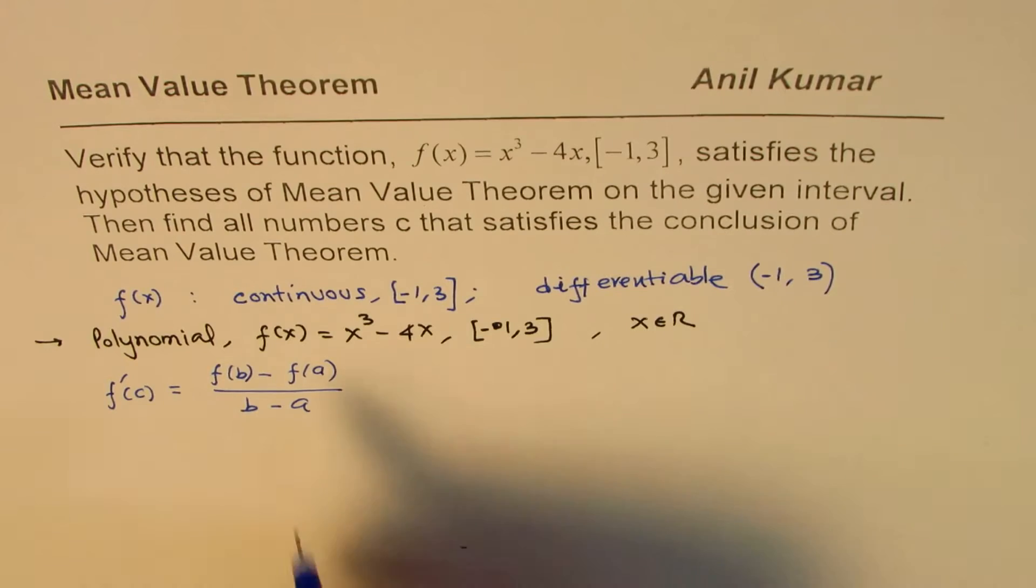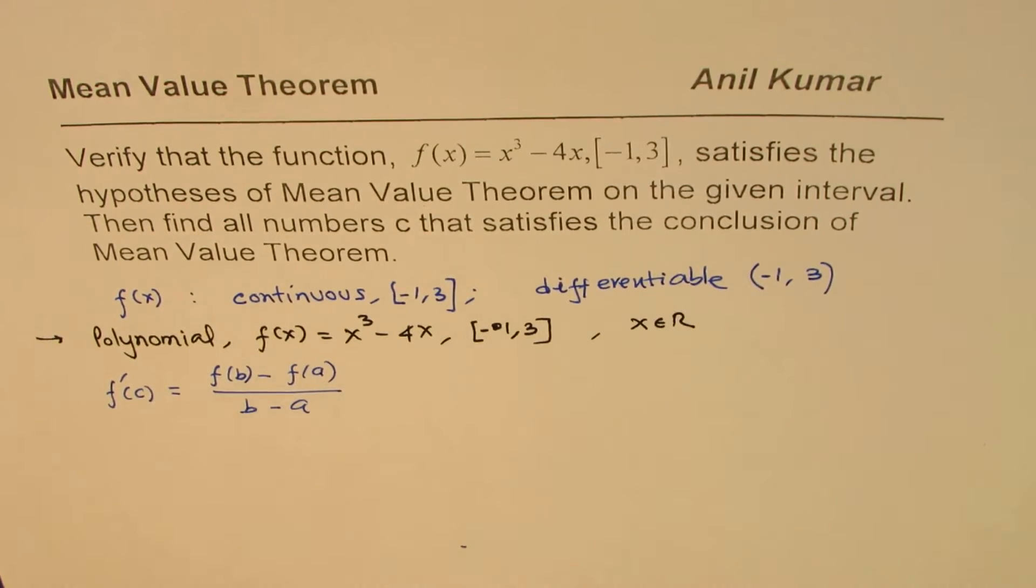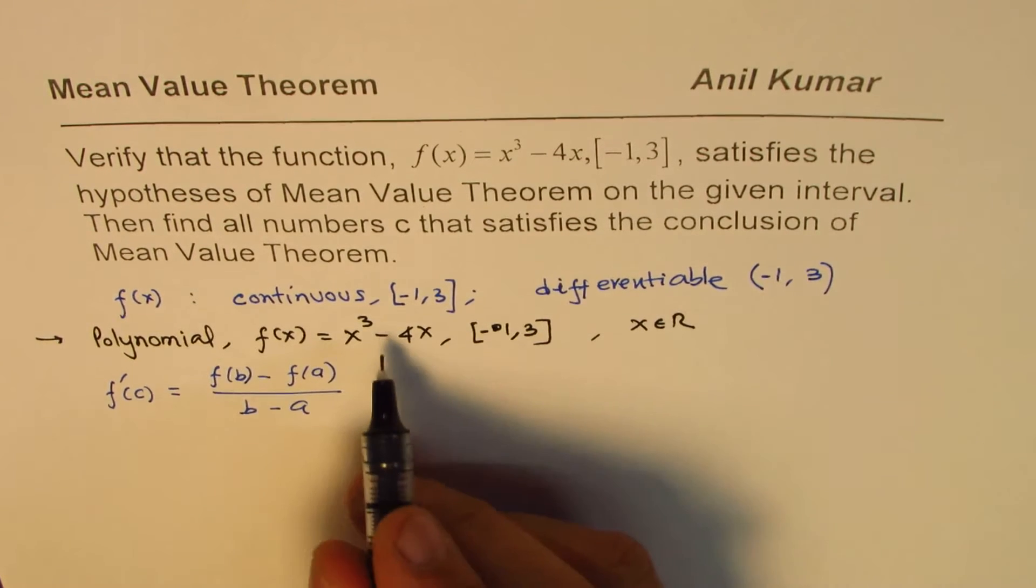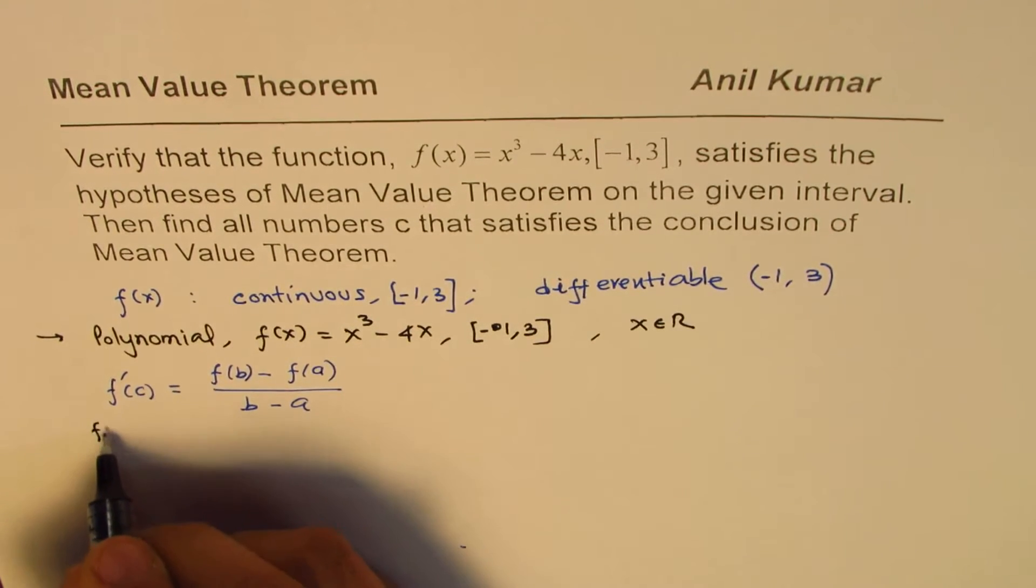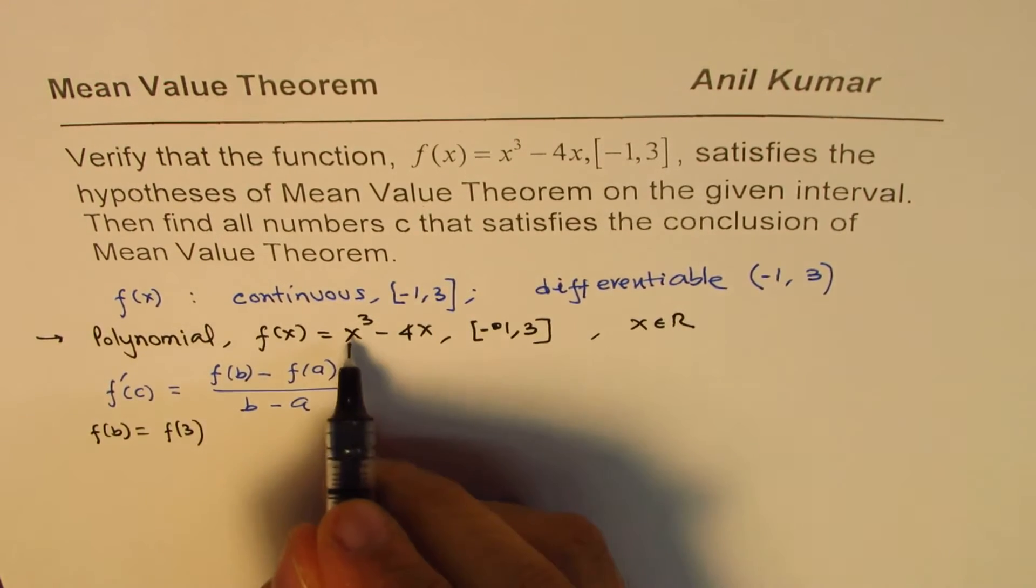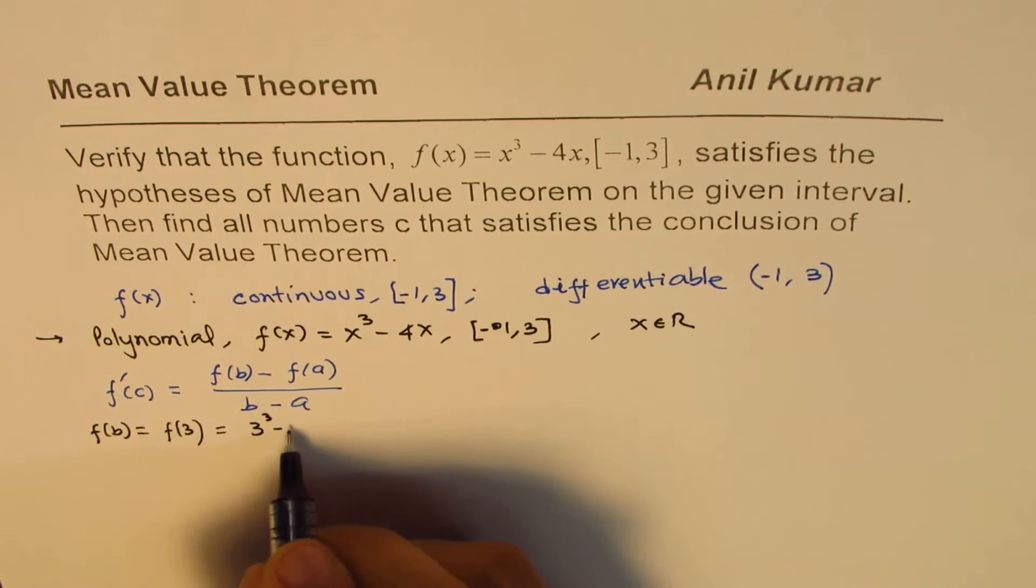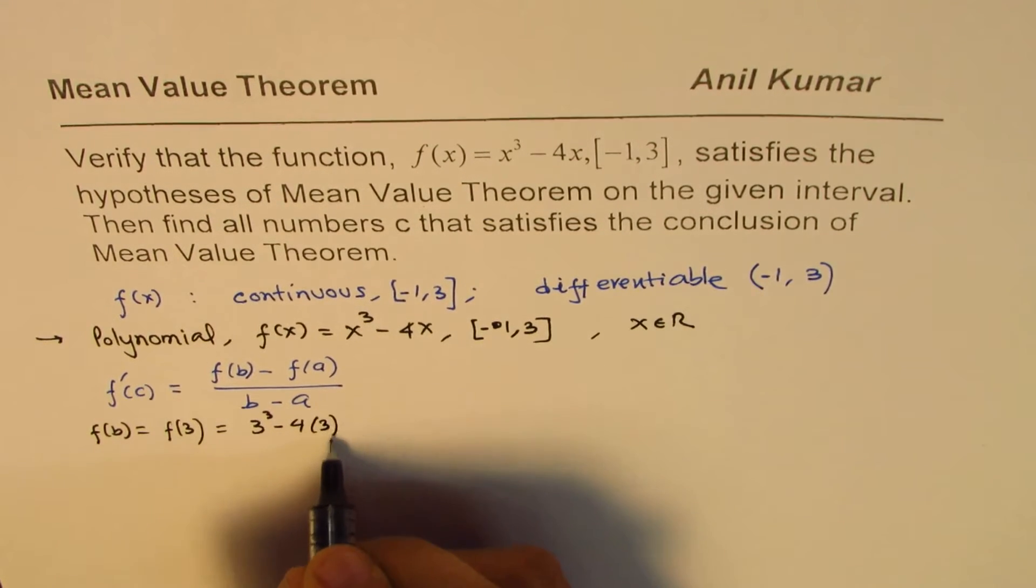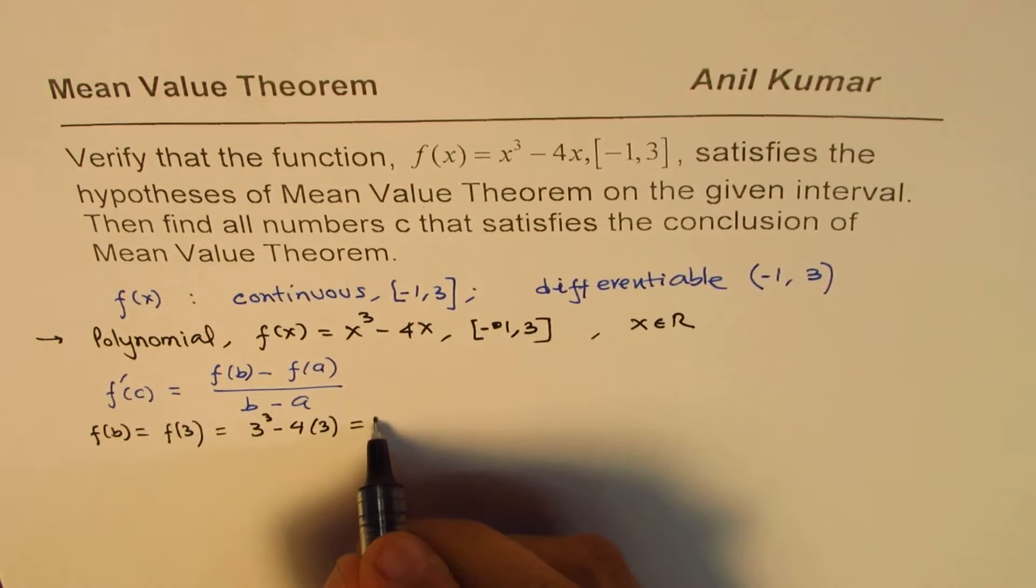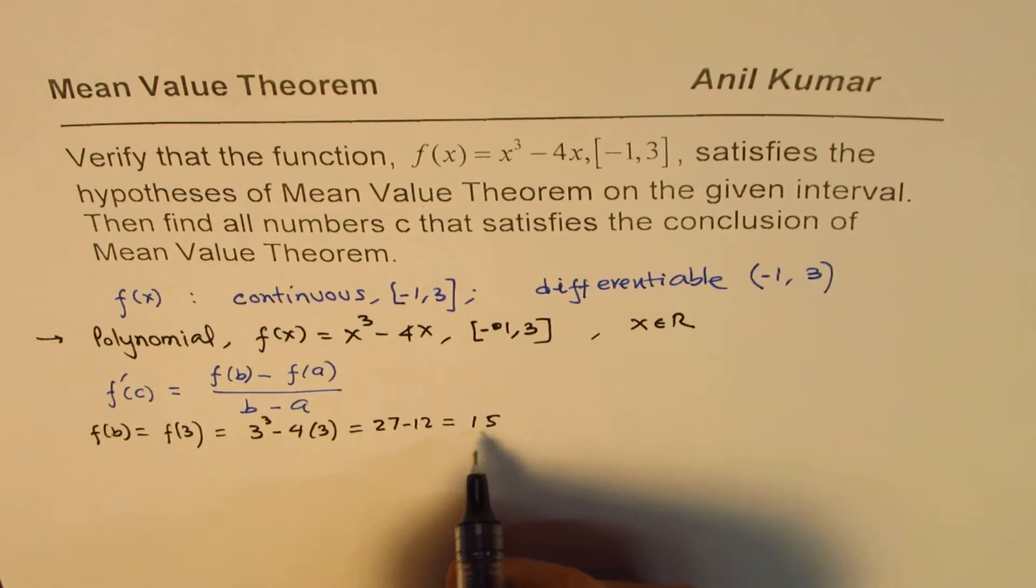So, in our case, we can find what f b and f a are, substitute the values, and then calculate. So, f of b is equals to f of 3. So, if I substitute 3 here, we get 3 cubed minus 4 times 3. That is 27 minus 12. So, that is 15, right? So, 27 minus 12 is 15.